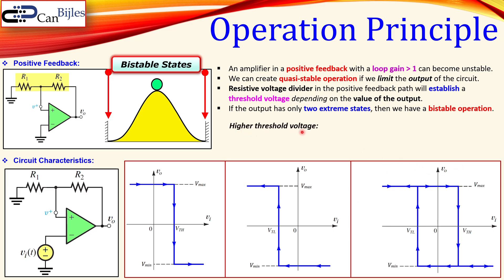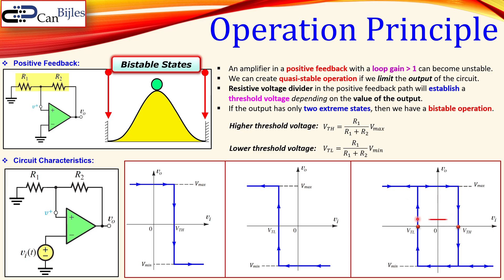In formula form, for our high threshold voltage we can derive this formula, which is straightforward from the circuit. At the V+ node there is a voltage division: R1 over (R1 + R2) times the output voltage, which is V_max for the high threshold. Similarly, for the low threshold voltage V_TL, we use V_min instead of V_max. This region between the higher and lower threshold voltage is called the hysteresis.